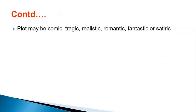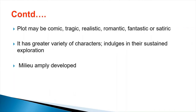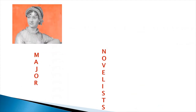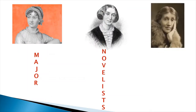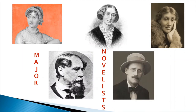Students, plot can be of different types — plot may be comical, tragical, realistic, romantic, fantastic, or satiric. Every novel has a great variety of characters, and the novelists indulge in the exploration of these characters. The story of the novel happens in some setting, but there is an atmosphere in a novel which is also highly developed. Now let us have a look at some of the major novelists of English literature. You can see the pictures of Jane Austen, Virginia Woolf, George Eliot, Charles Dickens, and James Joyce.